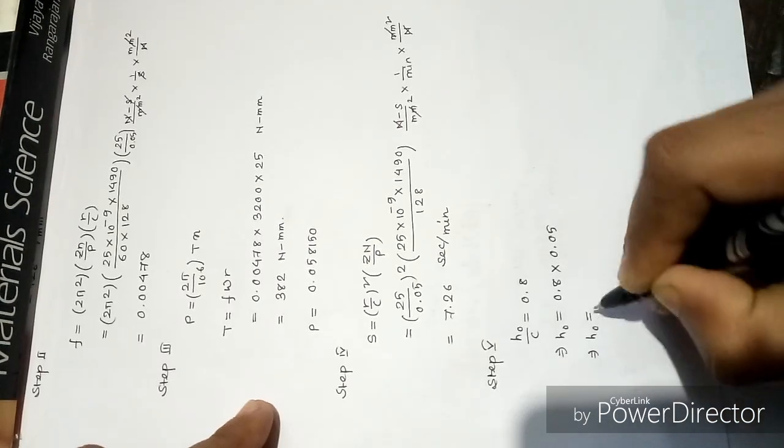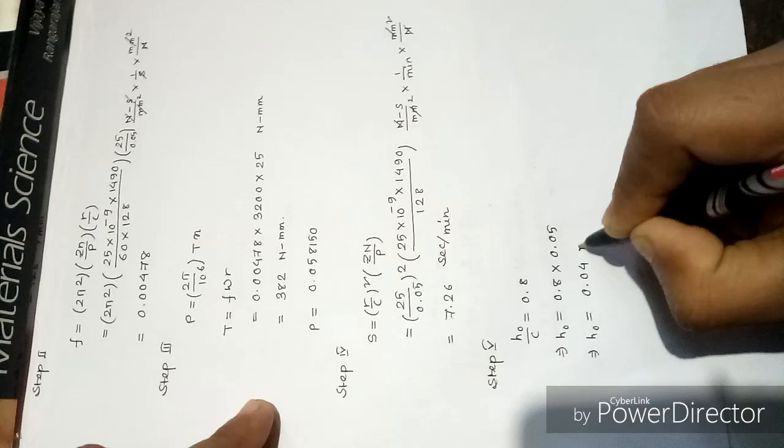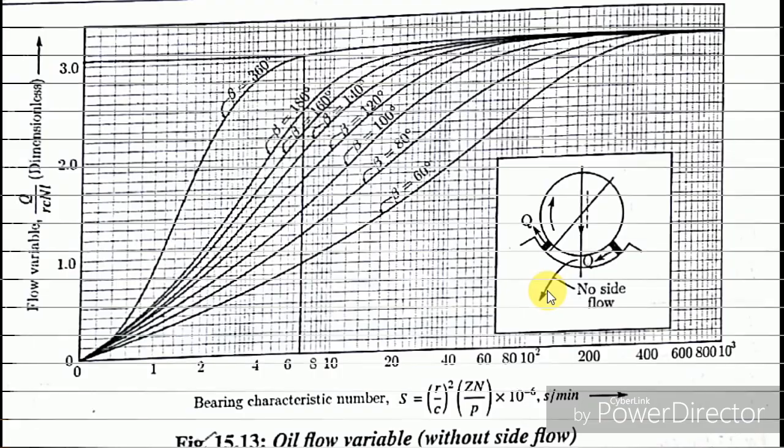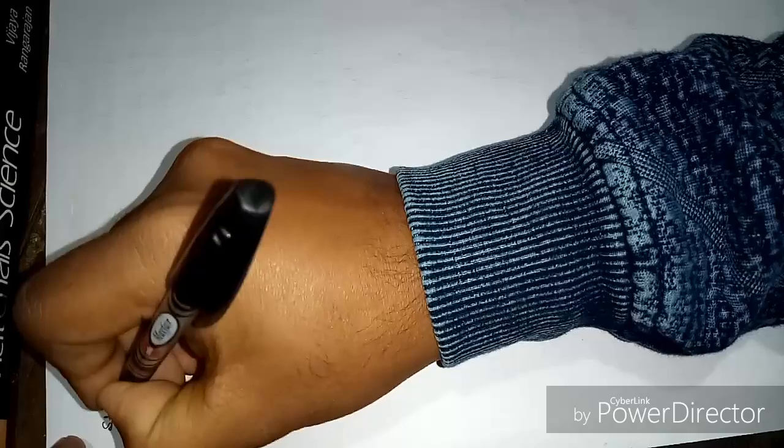Next question is to determine the flow requirement. That can be determined from this curve, which establishes the relation between the flow variable and bearing characteristics number, the Sommerfeld number. Since we have Sommerfeld number 7.26, you can see this value is approximately 3.0. From this curve we got Q by RCNL equals 3.